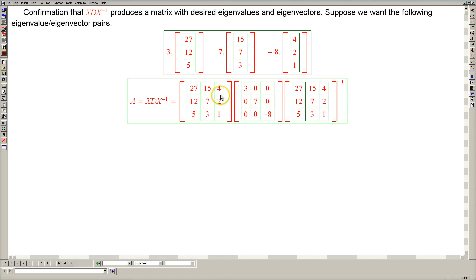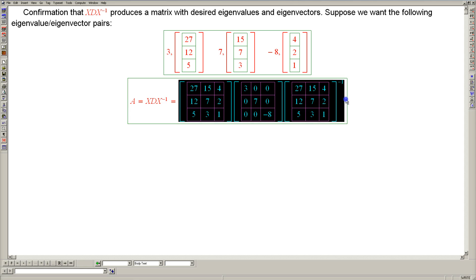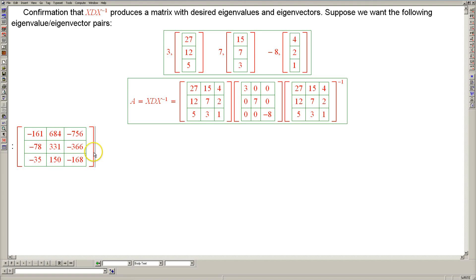So now let's use the computer to evaluate this triple product, of course the computer will also invert the matrix on the right, and the result is this crazy matrix.